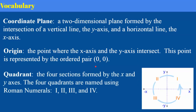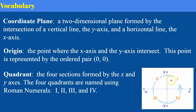Now we have quadrants in our coordinate plane. When the y-axis and the x-axis intersect at the origin, they divide the plane into four quadrants: quadrant one, quadrant two, quadrant three, quadrant four. Notice that the quadrants go in order counterclockwise. And we name them using Roman numerals: Roman numeral I, II, III, and IV.